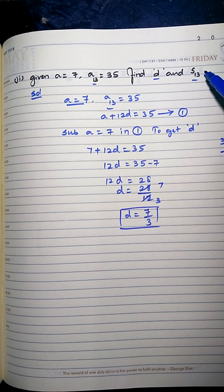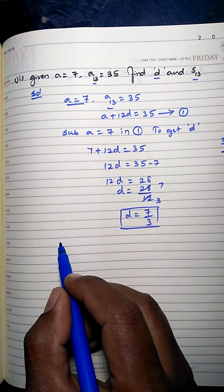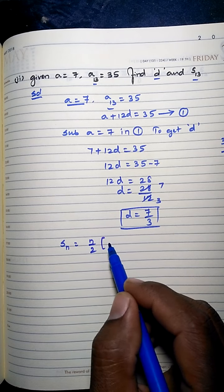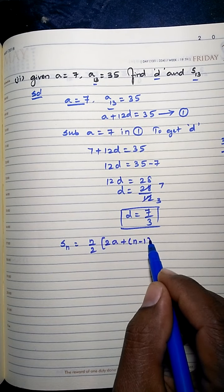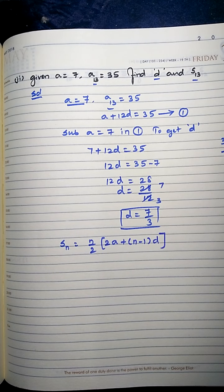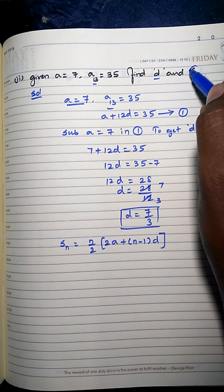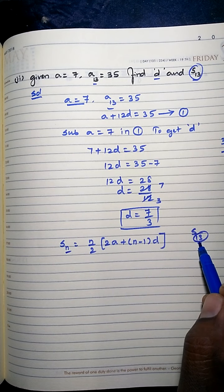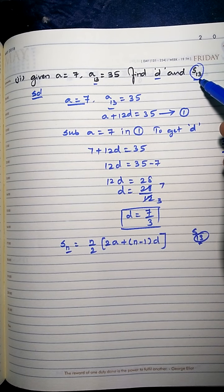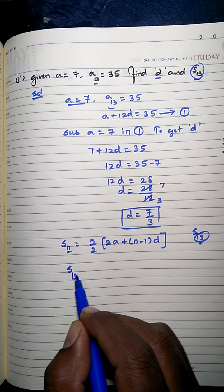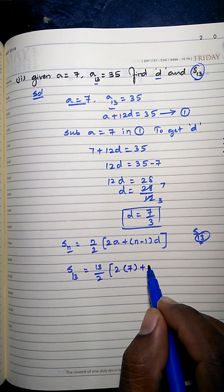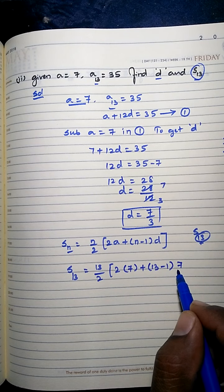Now we have to find S13, which means the sum of 13 terms. Since the last term is not known here, we use the other formula: Sn = n/2 × (2a + (n−1)d). Here S13 means the sum of 13 terms, so n = 13. So S13 = 13/2 × (2×7 + (13−1) × 7/3).